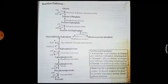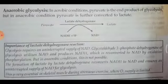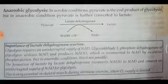Now let us see how the glycolytic pathway proceeds in anaerobic conditions. In both aerobic and anaerobic conditions, the product obtained up to this point is pyruvate. Afterwards, the presence or absence of oxygen determines the final product: in aerobic conditions, pyruvate is converted to acetyl-CoA, whereas in anaerobic conditions, pyruvate is converted to lactate.